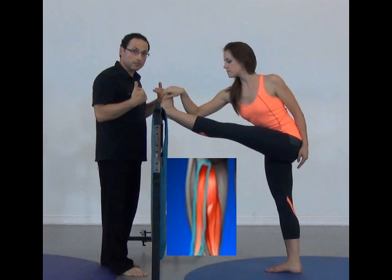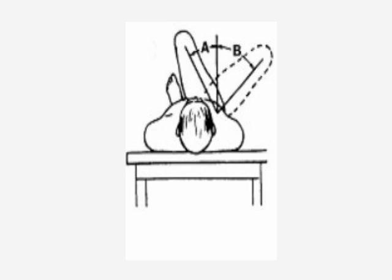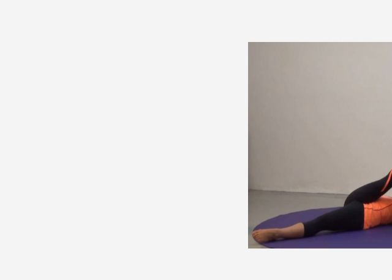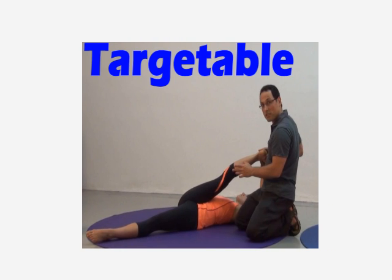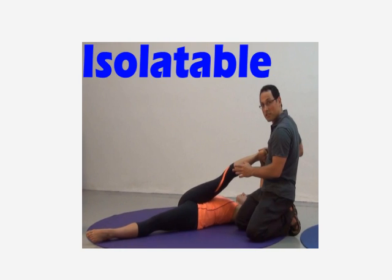The muscle is also a weak horizontal extensor, and that is very important, so that elusive muscle fibers become targetable and isolatable.